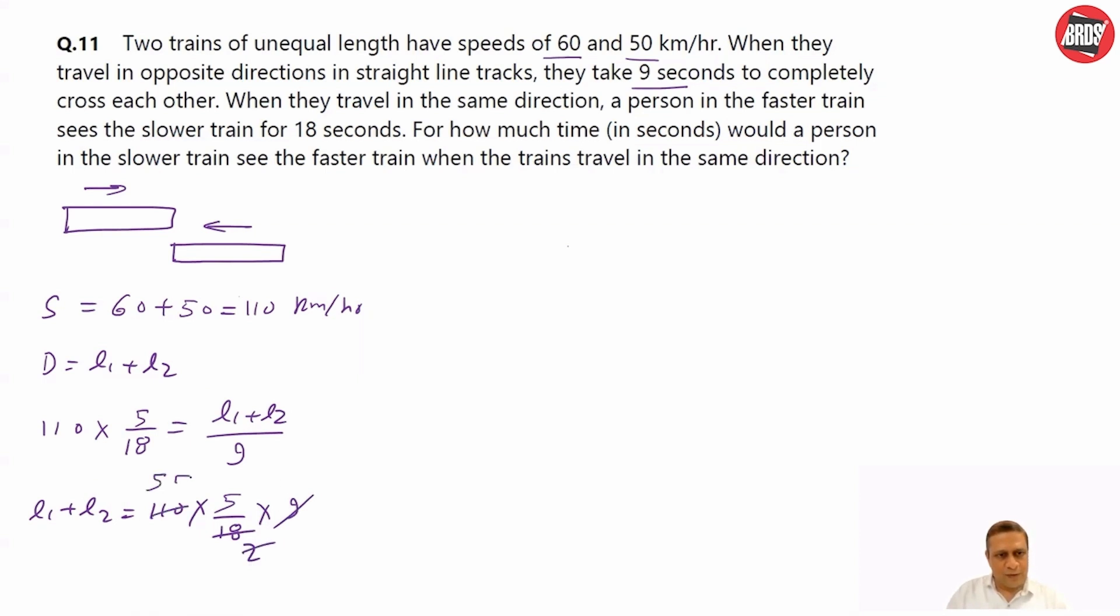L1 plus L2 is equal to 110 times 5 by 18 times 9. So, you cancel this out. Double of 50 is 100, double of 5 is 10. So, 55, 5 is up. What you get is L1 plus L2 equals 275. That is one information we have.